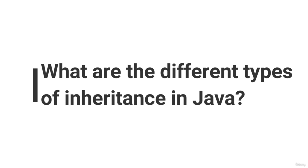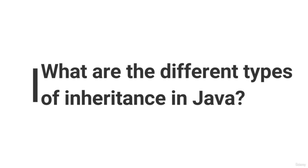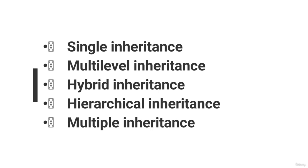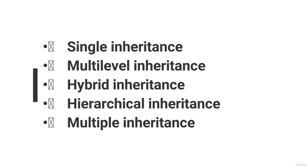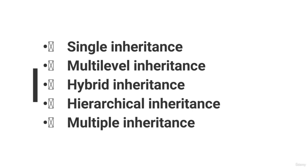What are the different types of inheritance in Java? The different types are: single inheritance, multiple inheritance, multi-level inheritance, hybrid inheritance, and hierarchical inheritance. One important point: multiple inheritance is not supported using a Java class but can be achieved through an interface.